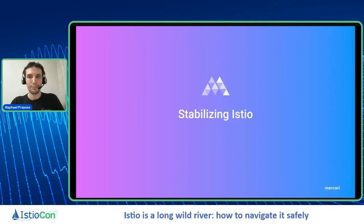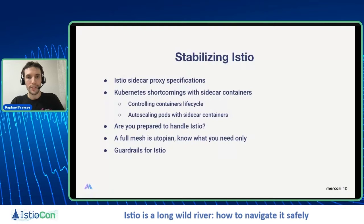Stabilize implies that something — here Istio — is not stable enough, and in our case it was not enough. We will quickly explain the specifications of the Istio sidecar proxy to understand how and why we had to stabilize it on Kubernetes. After that, we will explore an important question we wish we had asked ourselves one year and a half ago. Then we will explain how a full mesh is utopian and the importance of knowing only what you need. And finally, we will briefly explain some guardrails for Istio.